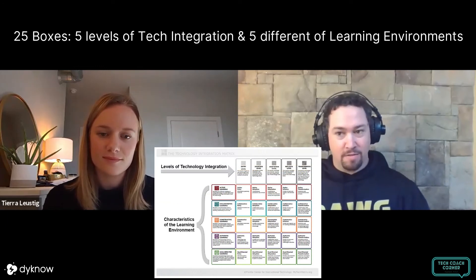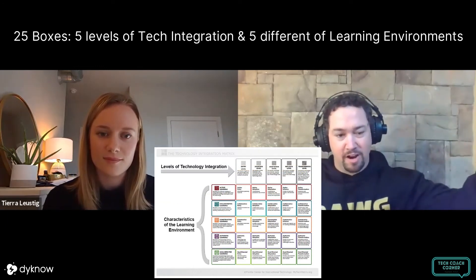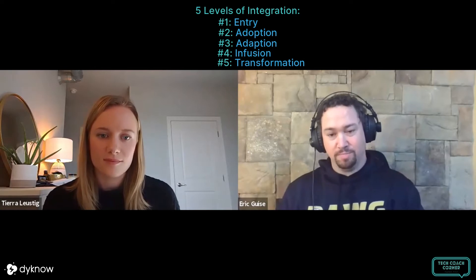So what is the matrix? It's 25 boxes made from five different levels of integration and five different learning environments. The levels of integration look a lot like SAMR, but there are five instead of four: entry, adoption, adaption, infusion, and transformation. Entry is your substitution, adoption is your augmentation, adaption is your modification, and then redefinition is broken down in the technology integration matrix into infusion and transformation. So it's all pretty much the same — just different words.